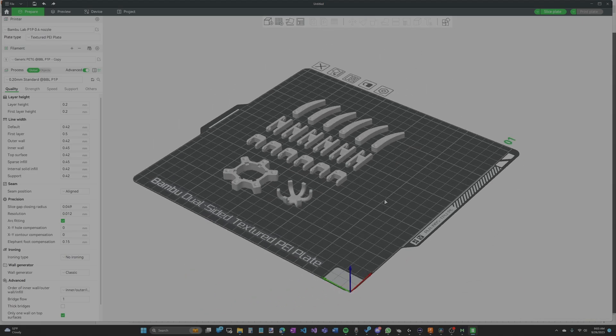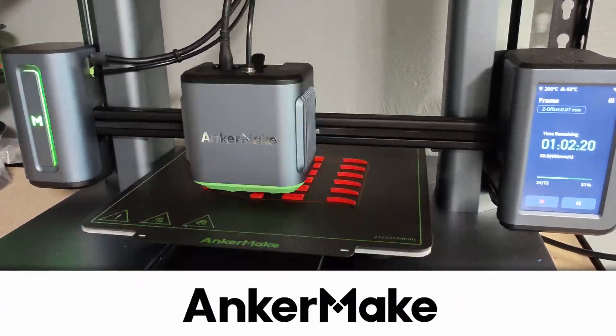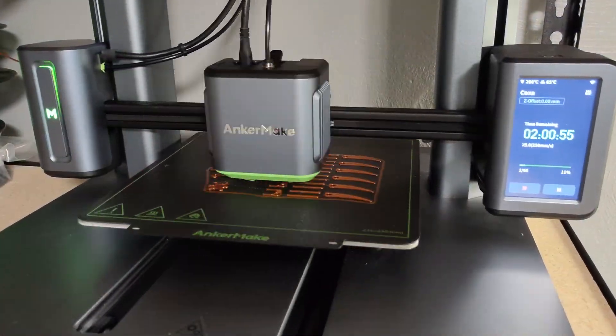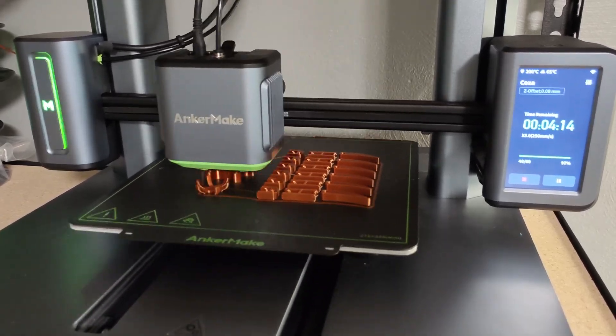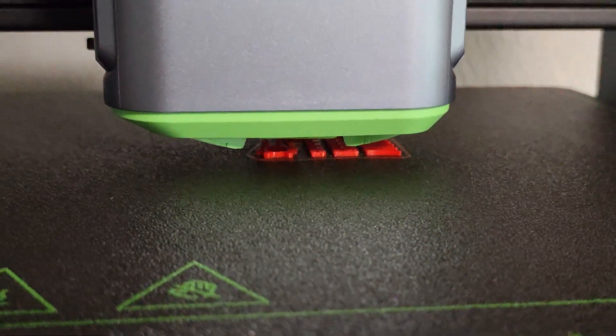My big hexapod and all the small ones were printed with the AnkerMake M5 printer, the sponsor of this video. I've been exclusively using the M5 for this hexapod project since the redesign and it's been doing a fantastic job. It prints fast, has been extremely reliable, and is insanely accurate. You'll see just how accurate in a bit. Check out the link in the description to learn more.